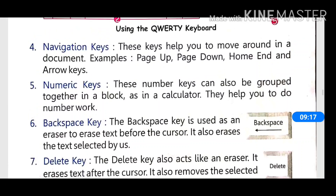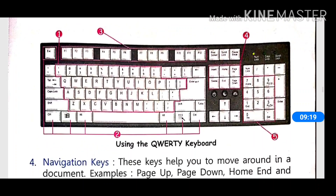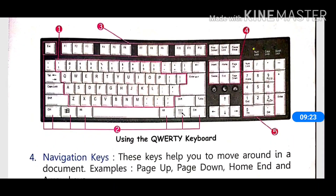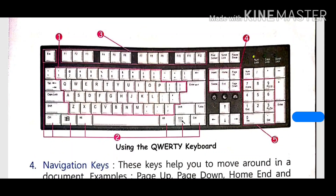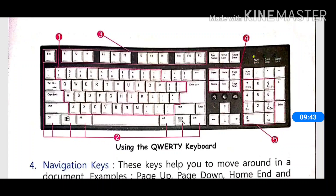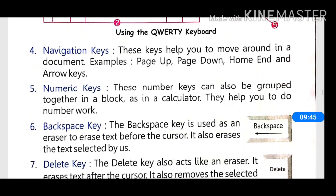Next is the numeric keypad. We can see numbers from 0 to 9 arranged like a calculator on the right side of the keyboard. This helps us type numbers quickly in our work on the computer.